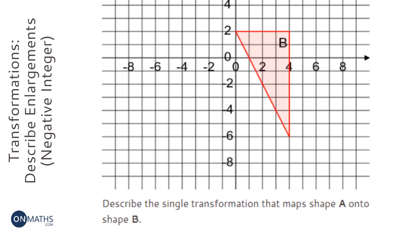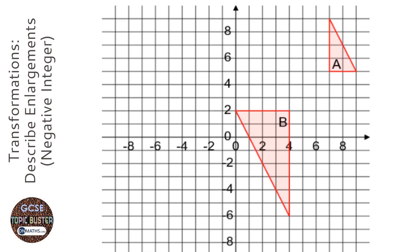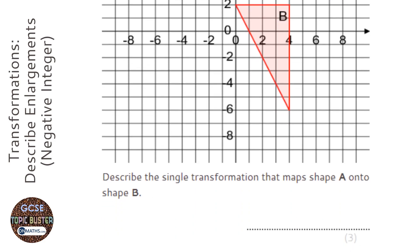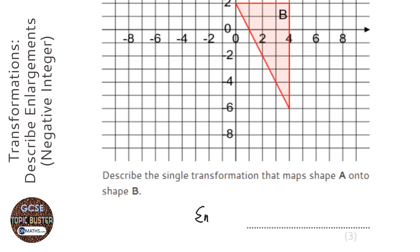Okay, so it's asking us to describe the single transformation from A to B. Well, it's grown, so it must be an enlargement. It's important you write this word down and make sure you don't say it grows or something like that—just enlargement.